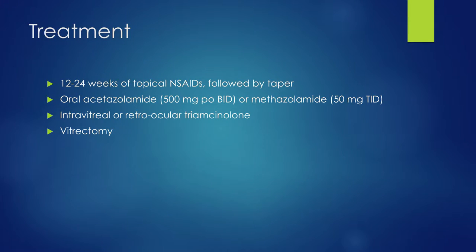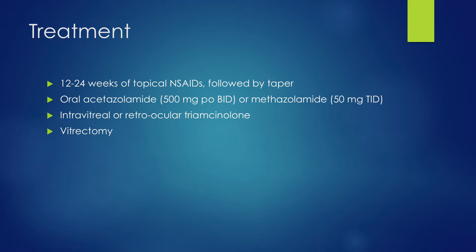Let's say you have a good surgery but the patient gets CME anyway — how do you treat it? I would start with 12 weeks of topical nonsteroidals — bromfenac, nepafenac, or ketorolac — followed by a slow taper. If that is not sufficient, you can administer oral medication through carbonic anhydrase inhibitors such as acetazolamide or methazolamide. Acetazolamide is much cheaper but has more systemic side effects such as dizziness or metabolic imbalances, whereas methazolamide is more expensive but has fewer side effects.